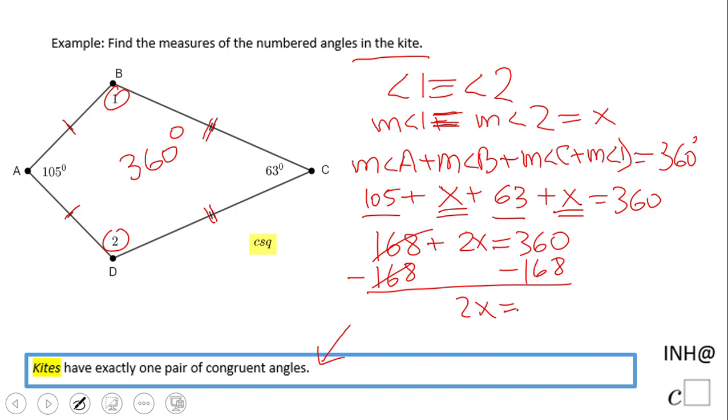We subtract 168 from both sides, we get 2X equals 192. And X divided by 2 obviously equals 96. So that means the measure of angle 1, like I said, equals the measure of angle 2, and both of them are 96.